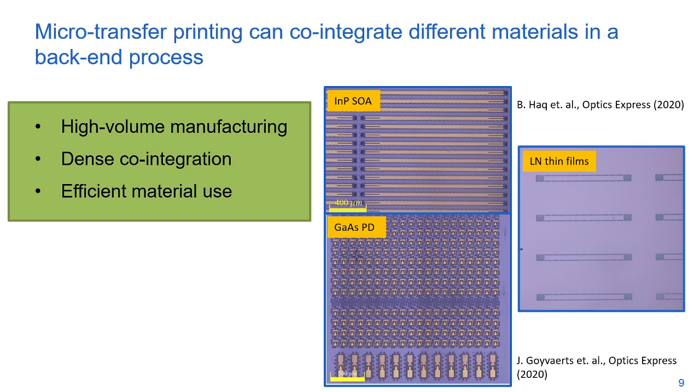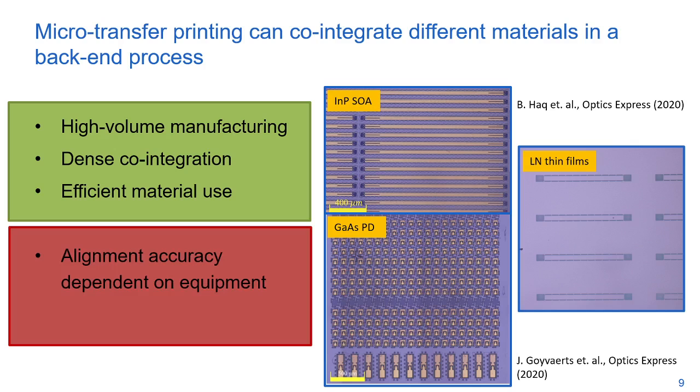The method is however reliant on alignment accuracy which can be equipment-dependent. Using the appropriate tool is important. The use of an adhesive layer of BCB is required which can sometimes cause issues. On the right are examples of different devices transfer-printed in our group: indium phosphide semiconductor optical amplifiers, gallium arsenide photodetectors, and lithium niobate thin films.